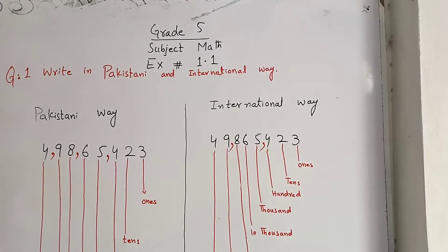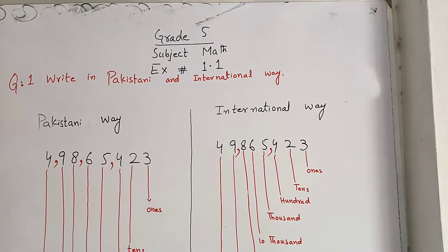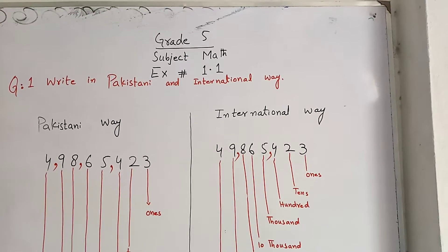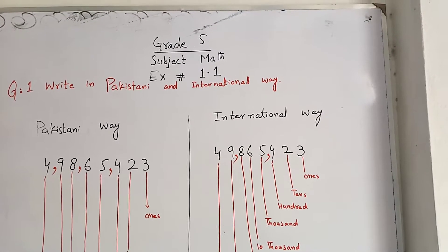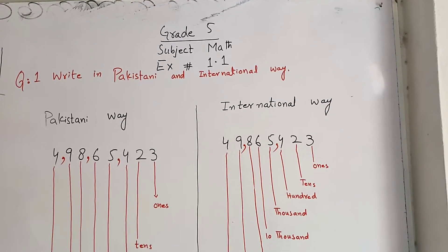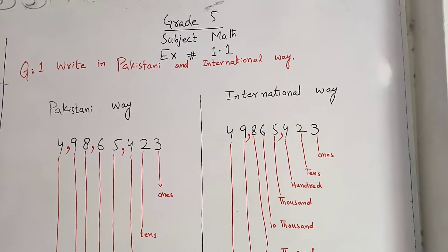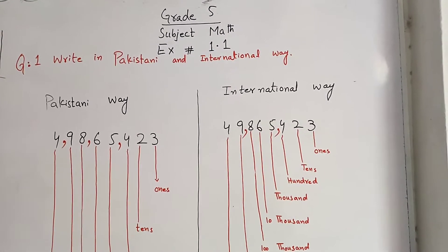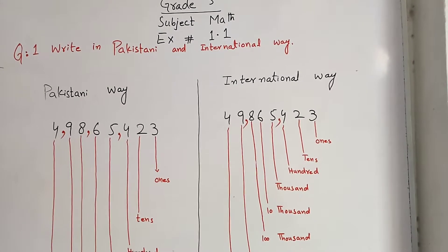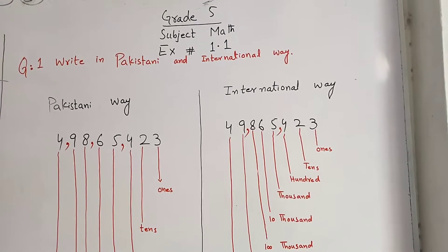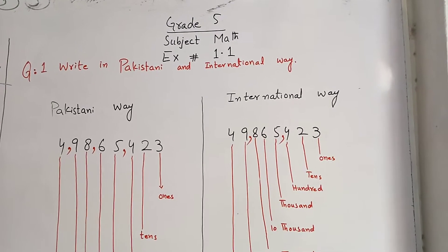Assalamualaikum. Today in Grade 5 we will study Maths. Our exercise is 1.1 and our first question is: Write in Pakistani and international ways. First of all, I will explain how the numbers are different in Pakistani way and international way.